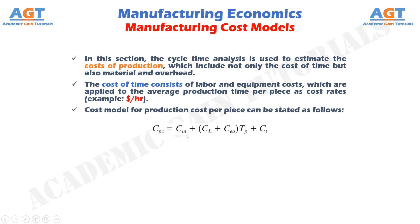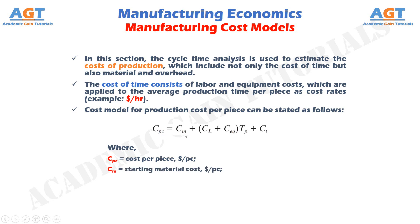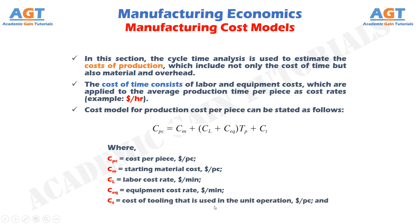CPC equals CM plus CL plus CEQ, multiplied by TP, plus CT. Where CPC represents cost per piece expressed in dollars per piece. CM represents starting material cost expressed in dollars per piece. CL represents labor cost rate expressed in dollars per minute. CEQ represents equipment cost rate expressed in dollars per minute. CT represents cost of tooling used in the unit operation expressed in dollars per piece. And TP represents average production time per piece expressed in minutes per piece.